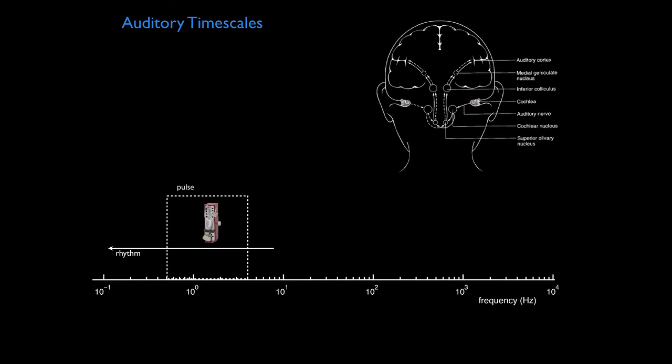If we take an impulse and we repeat it every 500 milliseconds, that's 2 hertz. We get a pulse. And what's more, subdivisions of pulse like eighth notes or groupings of pulse like half note or whole note are all in this frequency range.